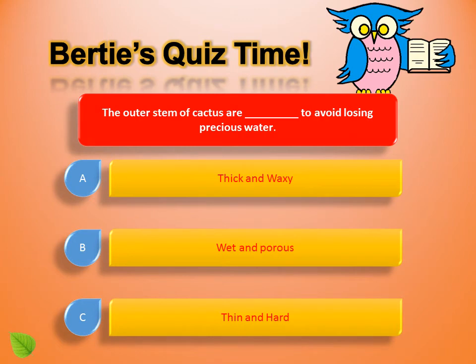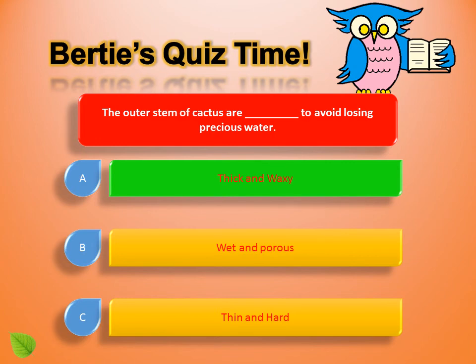The outer stem of the cactus is [blank] to avoid losing precious water. A. Thick and waxy, B. Wet and porous, C. Thin and hard. How about thick and waxy? That's right — thick and waxy is the correct answer!